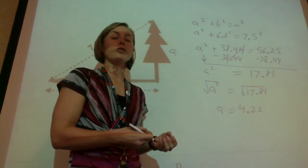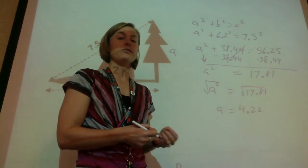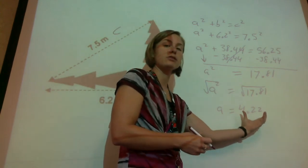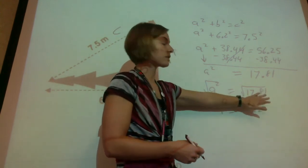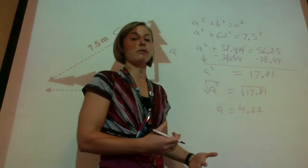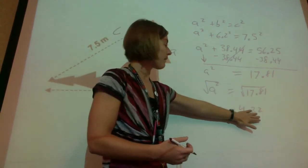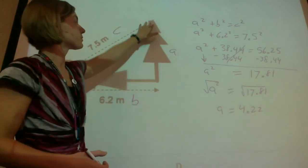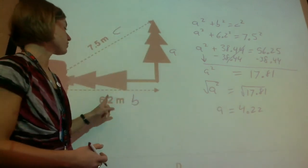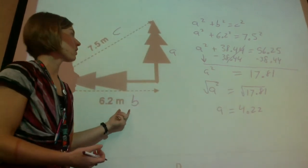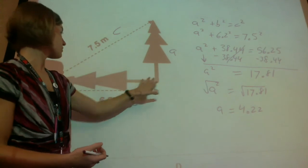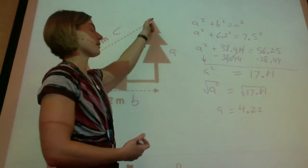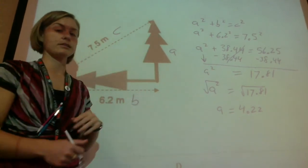We have A squared but we want regular A, so we need to square root both sides. You get a kind of nasty decimal, so we can leave it as approximately 4.22. If you don't have a calculator, you could leave it as the square root of 17.81 — that's technically a more complete answer since we're not rounding. But rounding to 4.22 is fine. So the height of this tree was 4.22 meters — pretty tall, which is why they'd use the shadow instead of climbing it.